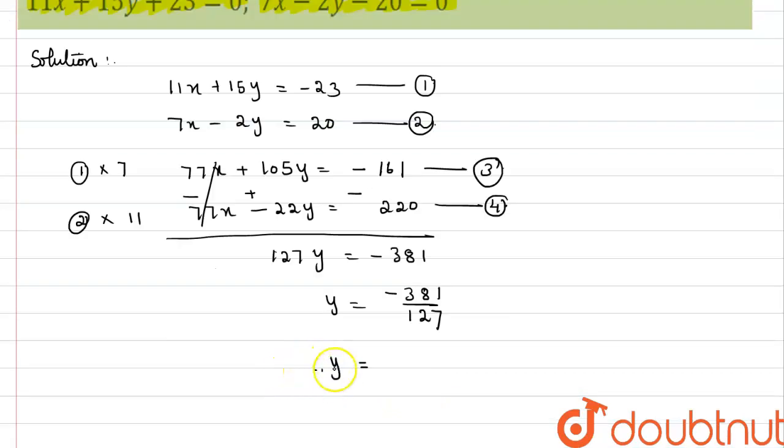Therefore y is equal to negative 381 by 127. Therefore y equals negative 3.